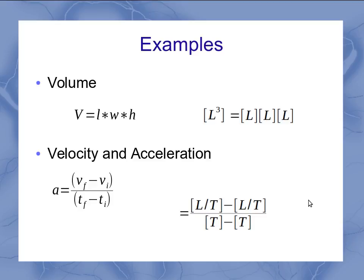And when I do the subtraction, I don't get zero like these were numbers. Instead, it retains the same dimension. So I have simply length over time divided by time for my dimensions. And if I do the algebra on that quantity, what I get is length per time squared is the type of dimension I have for acceleration.